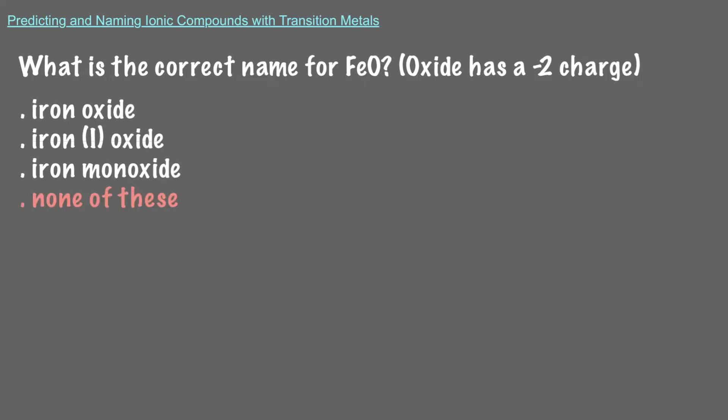Let's try another one. What is the correct name for FeO? Oxide has a negative 2 charge. None of these are the correct name for FeO. We never use prefixes like mono or di for ionic compounds, so this option is out. Iron oxide is ambiguous. There are a lot of iron oxides, we need to be specific.